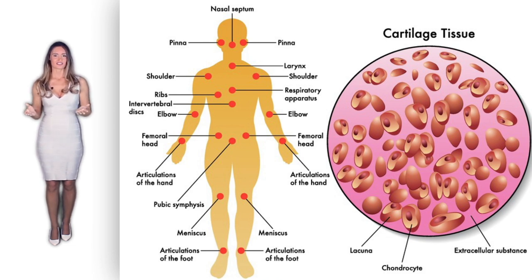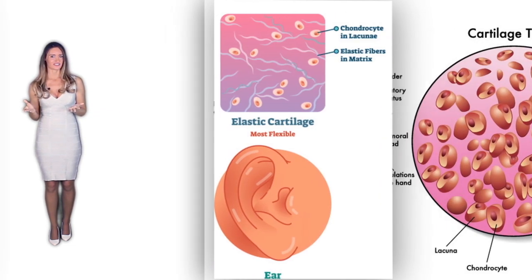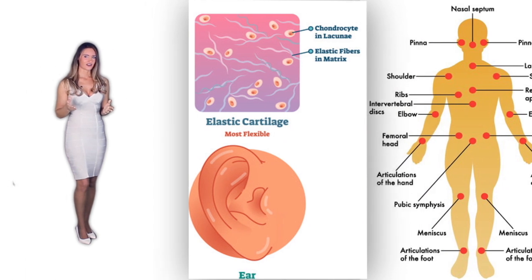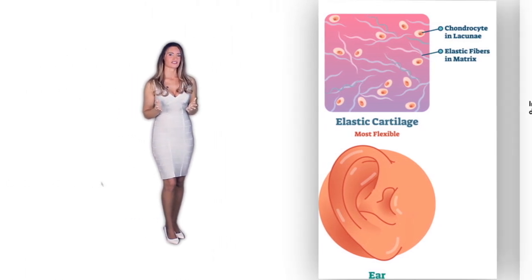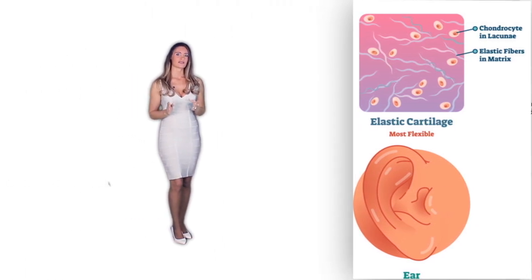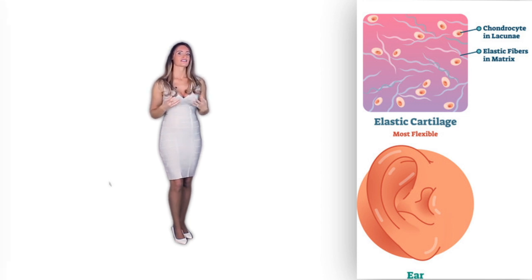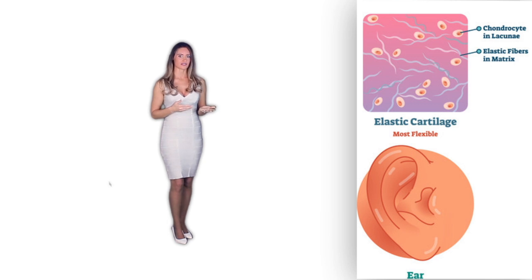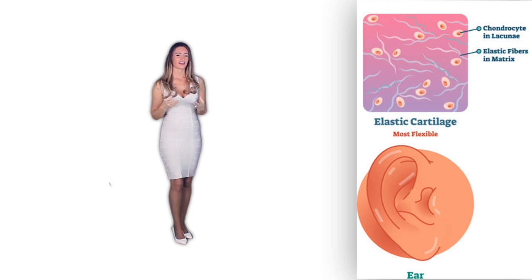The next type is elastic cartilage. Elastic cartilage is laden with fibers that are elastic and densely populated. It has more flexibility compared to hyaline cartilage, due to the presence of elastic fibers in its extracellular matrix.